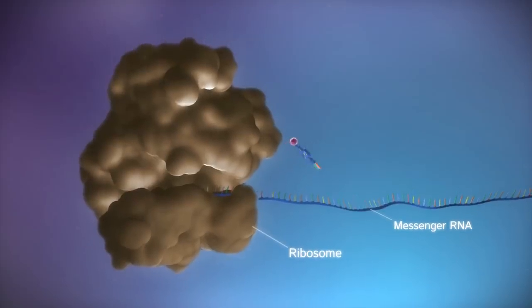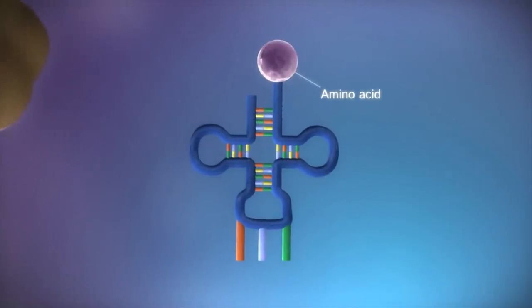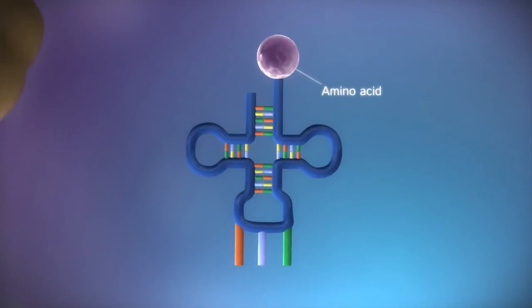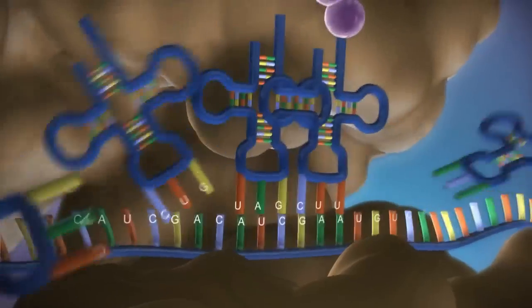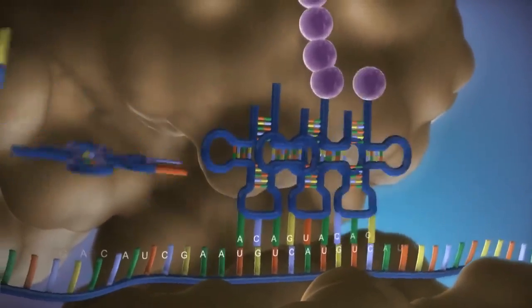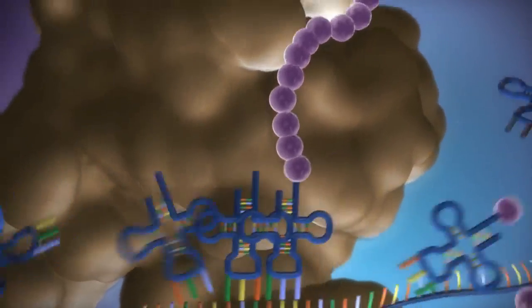The ribosome reads the code in the messenger RNA to produce a chain made up of amino acids. There are 20 different types of amino acid. Transfer RNA molecules carry the amino acids to the ribosome. The messenger RNA is read three bases at a time. As each triplet is read, a transfer RNA delivers the corresponding amino acid. This is added to a growing chain of amino acids.